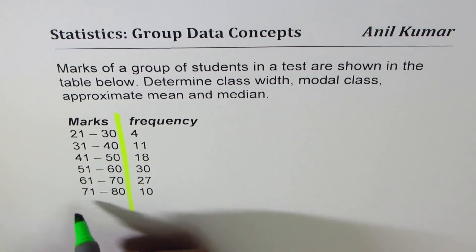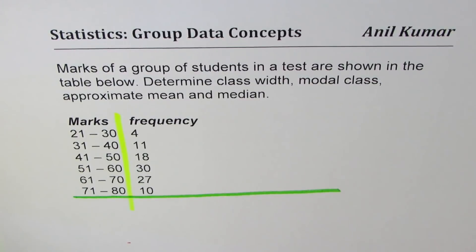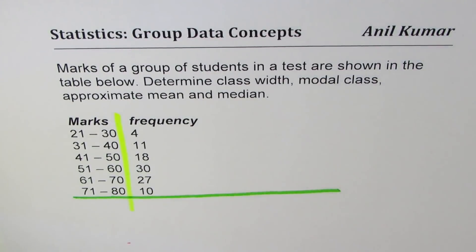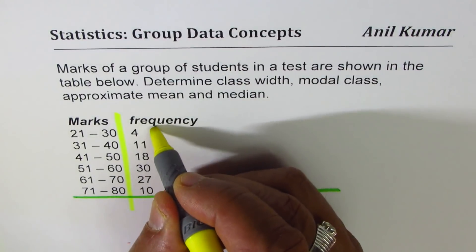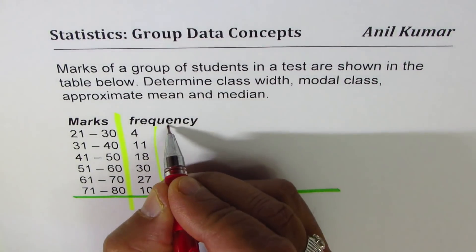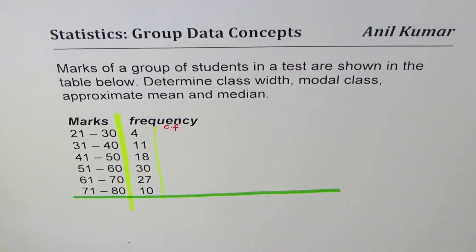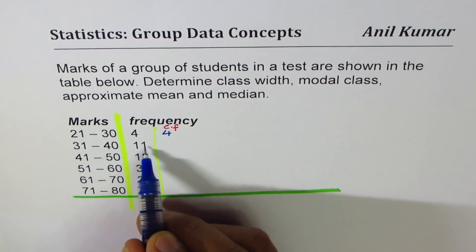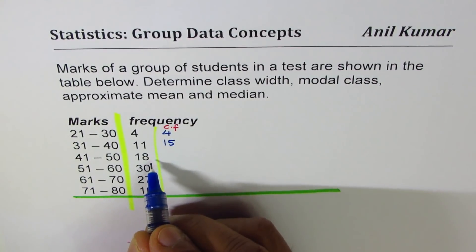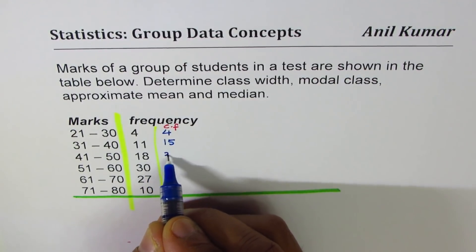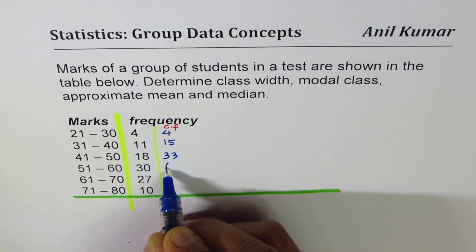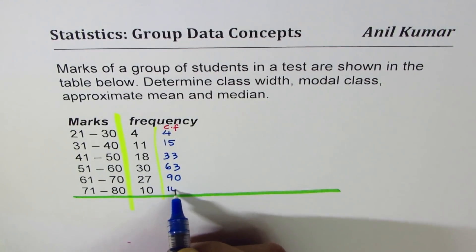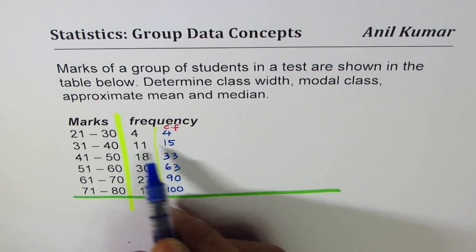So let's add this up. Let me draw a line here and extend this. We could also create a cumulative frequency table. So let me add another column here and call it cumulative frequency. 21 to 30 we have 4 students, and then extending to 40 gives 15, adding 18 gives 33, adding 30 gives 63, adding 27 gives 90, and then 10 gives 100.